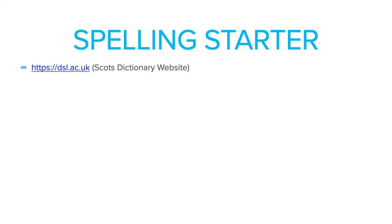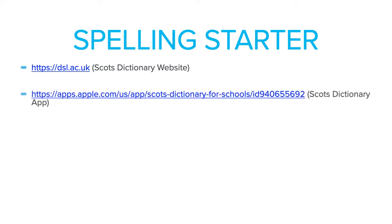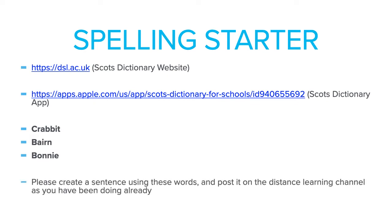We're going to start off with a wee spelling starter task, something that you're used to from English already. We're going to be using a different dictionary this time — a Scots language dictionary. You can get it at the link there, or you can also follow the second link and download a Scots online dictionary app, which is quite handy as well. The words I'd like you to focus on today are: crabbit, bairn, and bonnie. Have a wee think and see if you can come up with a sentence using these words, and post that sentence on your distance learning channel. Pause the video and have a wee go at that just now.